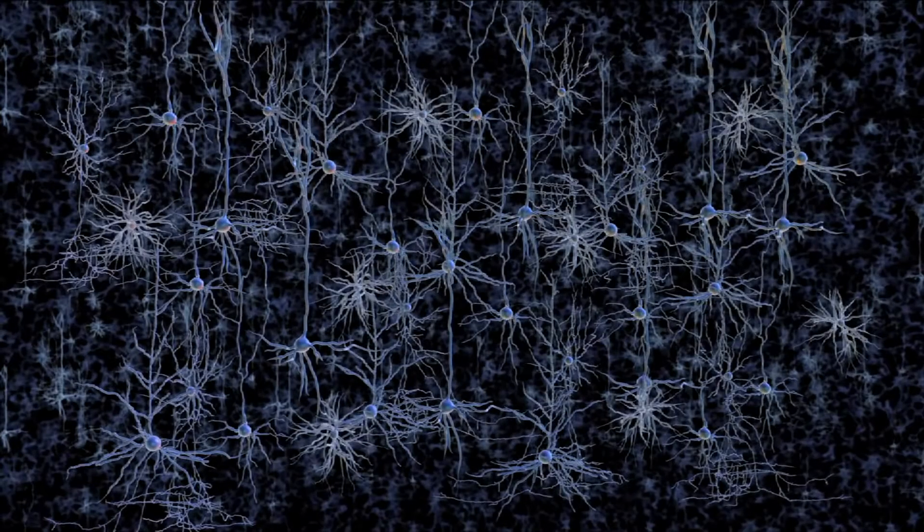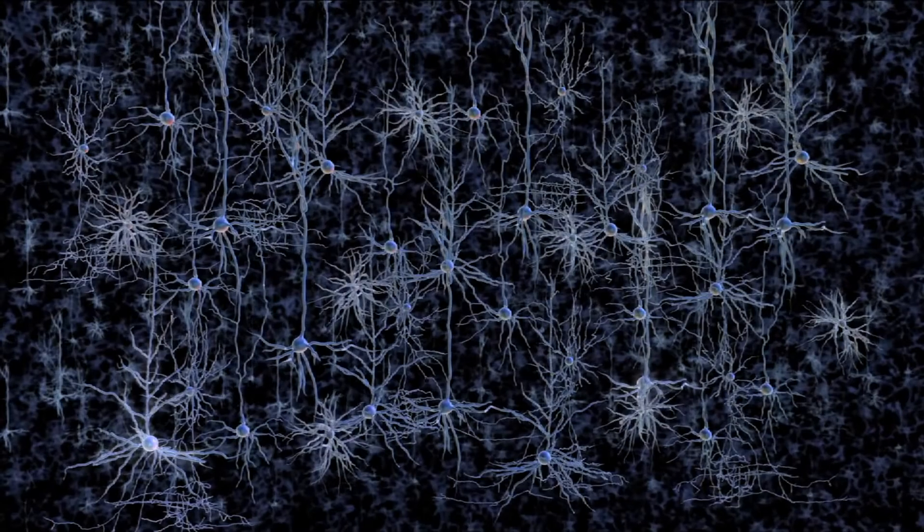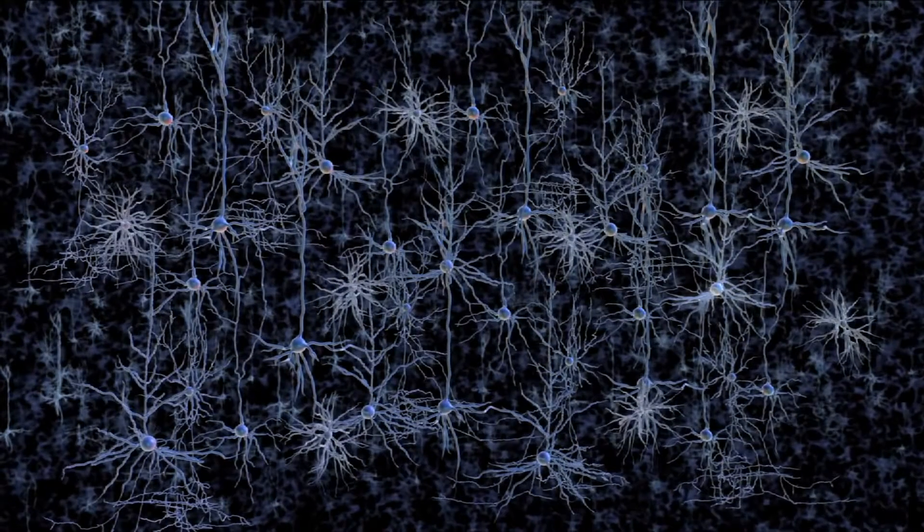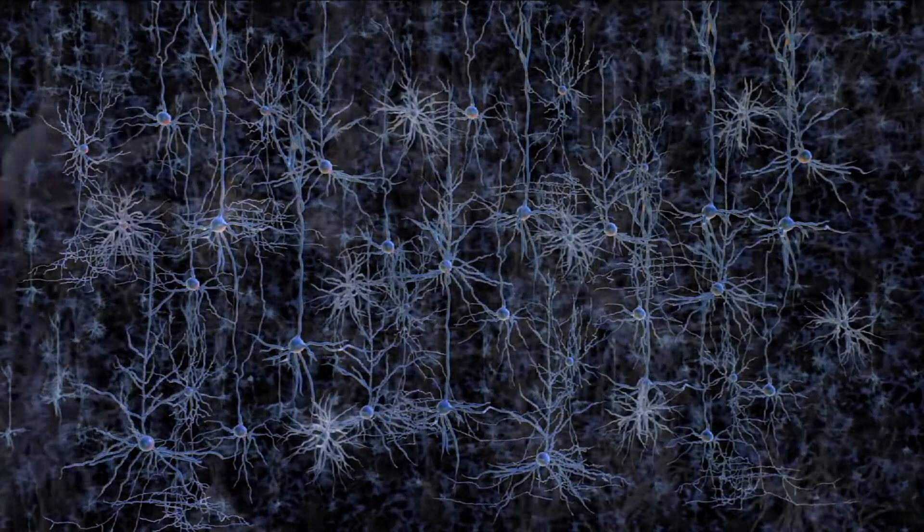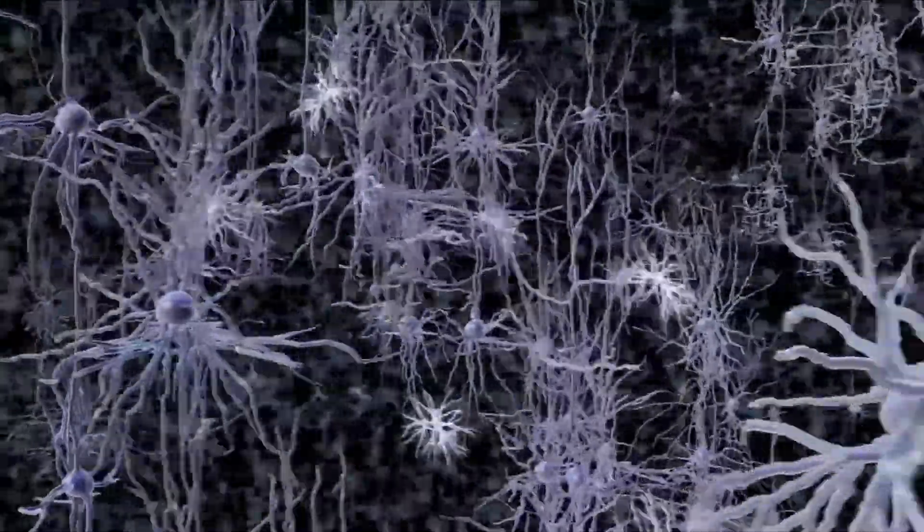If we could figure out the role that each of these cell types plays in the brain, we could understand how they work together to create thoughts, emotions, and behaviors, and how flaws in specific cell types may lead to devastating brain disorders like schizophrenia, Parkinson's, and depression.